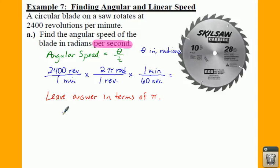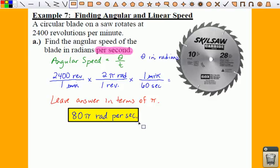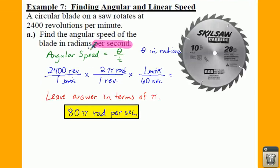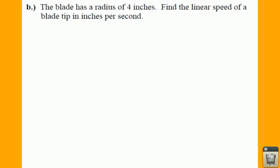That ends up and gives you an angular speed of 80 pi radians per second. Because your minutes are going to cancel. So radians per second. And then that's what's going to be your answer here. Alright. So that's for part A. So that's finding your angular speed.